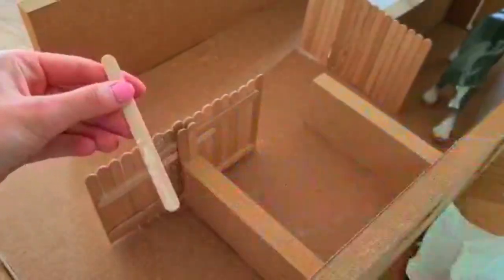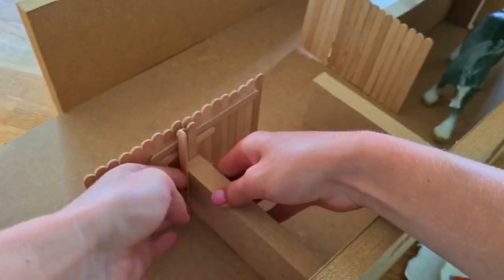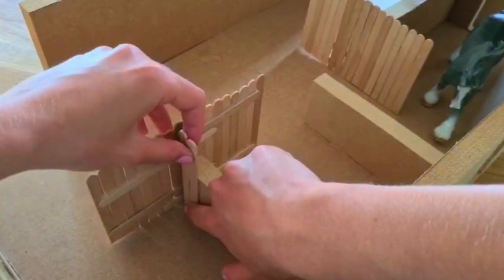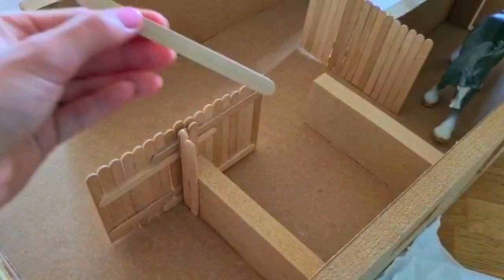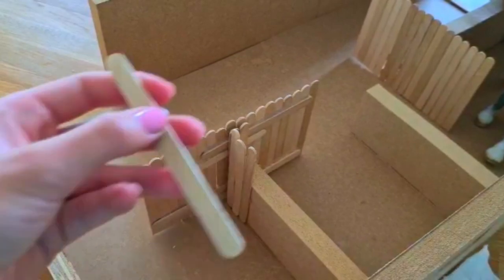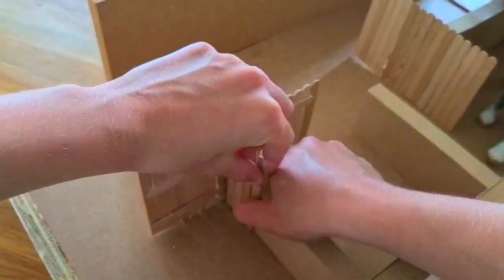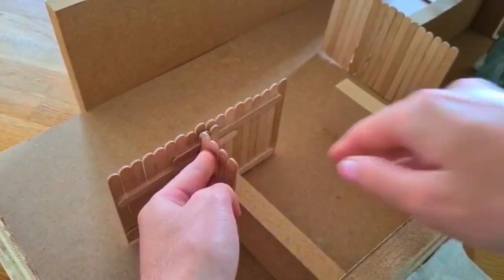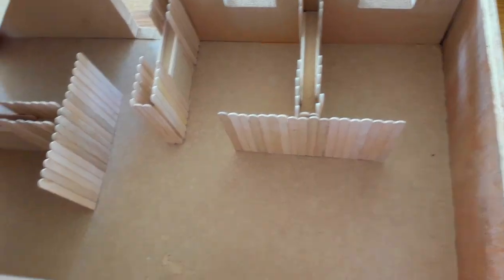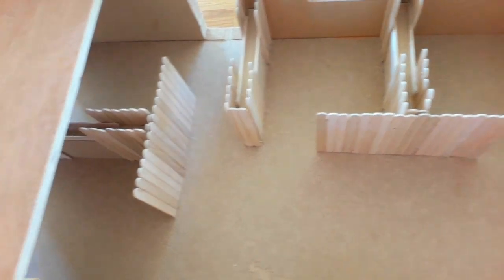Then I went ahead and did the two others off camera just because it was the same process, so you didn't need to see it twice. Here I'm gluing lots of upright lolly sticks in between the stalls to make the partition taller. It was actually really nice and therapeutic, quite relaxing. Which is a good thing because it did take a long time, so I'm going to skip ahead a bit to save you from all of that. And voila! All of the stalls are complete.